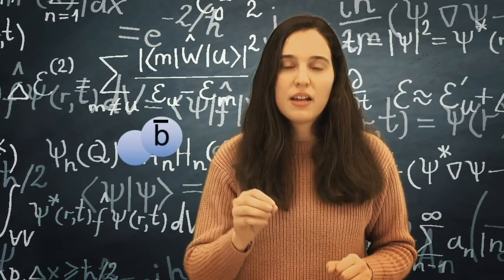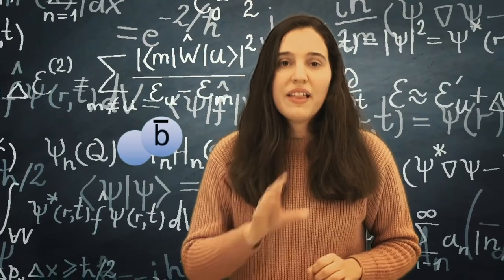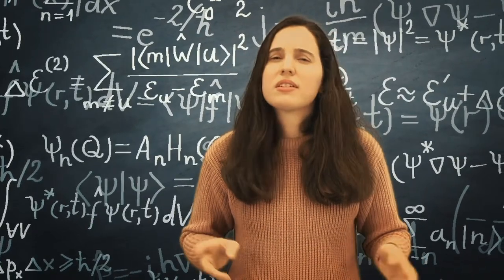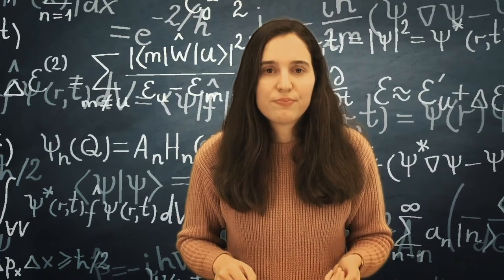These are composed by an anti-bottom quark and a different quark, that determines if we have a B+, a B0, or a Bs. But why am I focusing so much on these B particles?